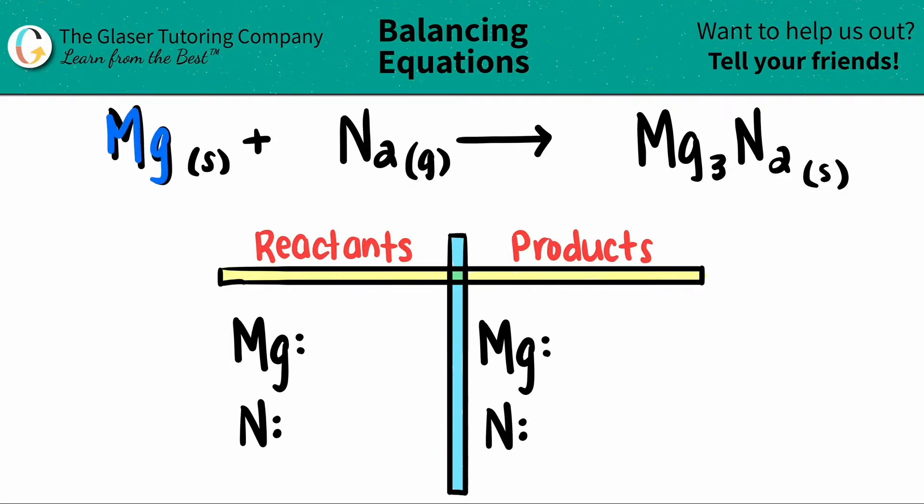This is just one magnesium, right? There's no two on the bottom or a three, or any coefficients, so that means I have one magnesium. Coming over to the nitrogen, I do see this two down here, which means that I will start off with two nitrogen.